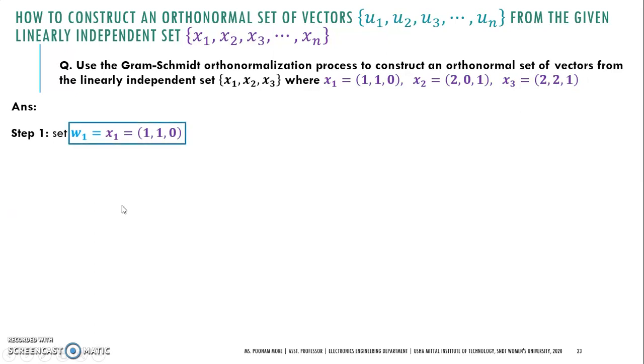First, as per the Gram-Schmidt orthogonalization process, we will set the first orthogonal vector equal to the first linearly independent vector, that is X₁. So W₁ equals X₁.